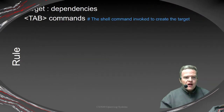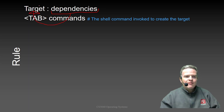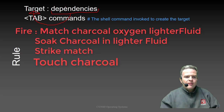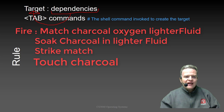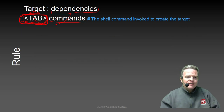A rule basically explains how we go from a set of dependencies, which are essentially inputs, to generate a given target. For example, if I wanted fire, my dependencies are match, fuel, and oxygen. The target is fire. The commands are shell commands that get invoked. The tab before each command is very, very important — if it's a space, the tool will not work properly, so you need an editor that properly recognizes spaces versus tabs.